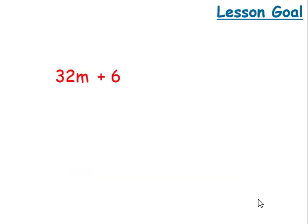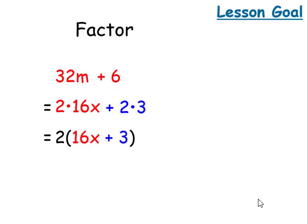In our second goal for today, we're going to try to figure out what number can divide both 32 and six. And this is called factoring out the greatest common factor. In this particular case, it's two. Two times 16 is 32 and two times three is six. So when we factor out the two, we're gonna be left with two times the quantity, 16 plus three.